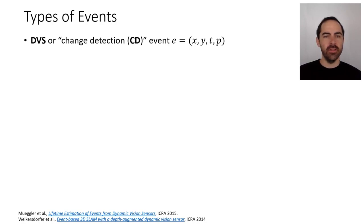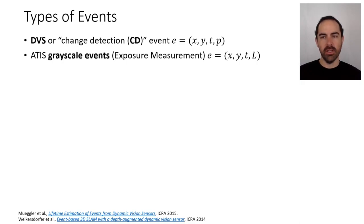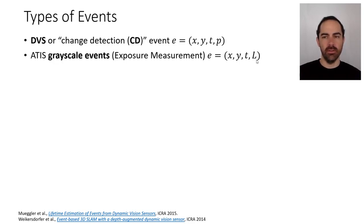First, there are the DVS or change detection events — every event has pixel coordinates, timestamp, and polarity. Then there are grayscale events by the ATIS, called exposure measurements, where every event has pixel coordinates, the time at which an intensity change happened, and instead of the sign of the change, we read the absolute intensity L or its log scale.